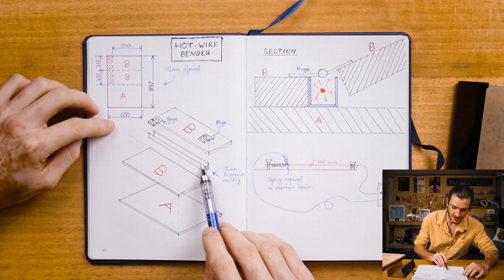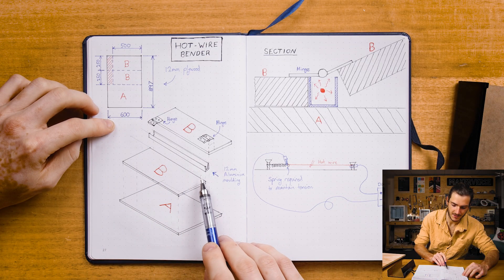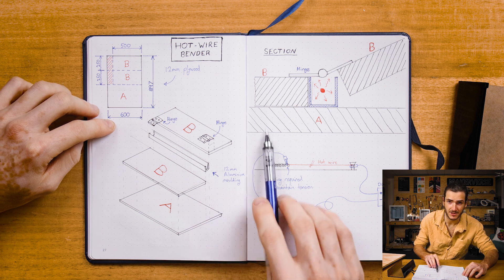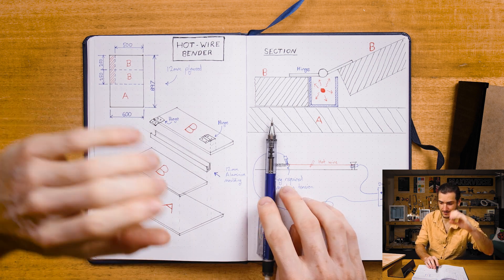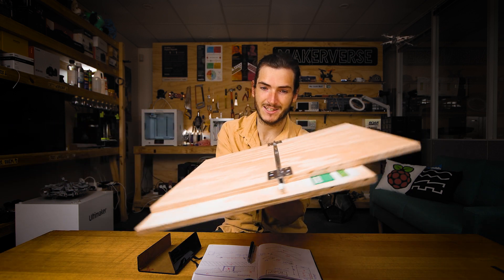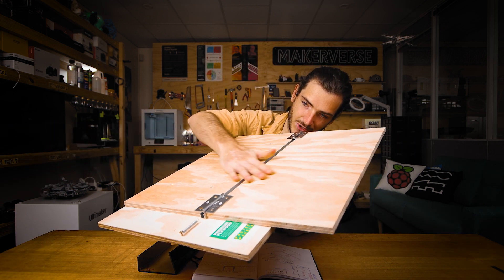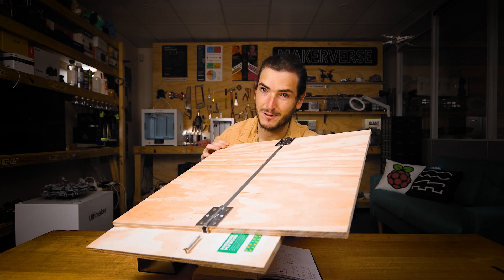Now as if by serendipity, the same hardware store also stocks 12 millimeter square aluminum molding. So that's a C-section of aluminum channel. 12 millimeter molding, 12 millimeter ply, you get this really beautiful flat working surface.